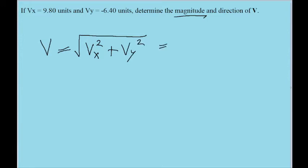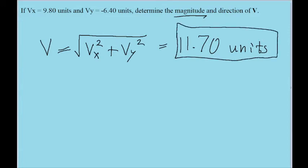So let's put this into our calculator. If we take the square root of 9.8 squared plus negative 6.40 squared, then we find a result of 11.70 units. I'm not actually told what those units are, but I have to write units anyway, because otherwise we're given a bad answer.